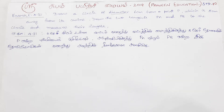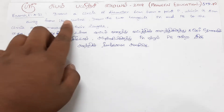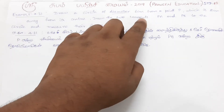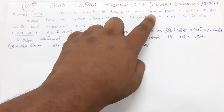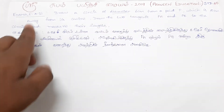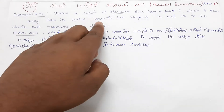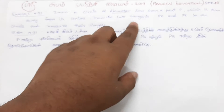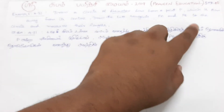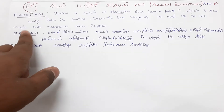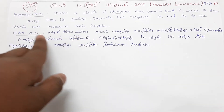Example 4.31: Draw a circle of diameter 6cm. From a point P which is 8cm away from the circle, draw the two tangents PA and PB to the circle and measure their lengths.